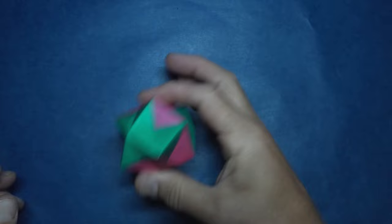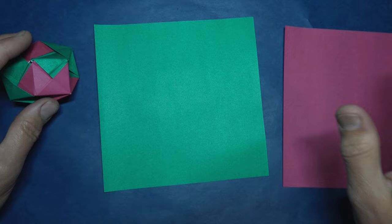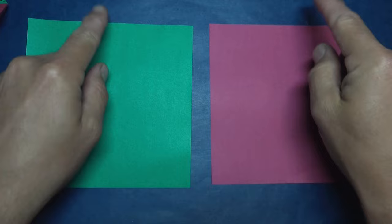All right, so for this model, I'm going to use two squares, but actually it's four 1x2 rectangles, and we're going to make a bunch of pre-creases. I think it's easier to make all of the pre-creases on the two squares, and then divide them into the two-by-one rectangles. So here goes.